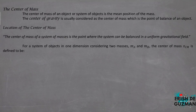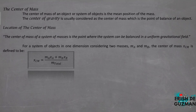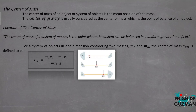For a system of objects in one dimension, considering two masses MA and MB (or M1 and M2), the center of mass along the horizontal axis is defined as: x_cm = (MA·xA + MB·xB) / (MA + MB). That is, we multiply each mass by its location from the reference point and divide by the total mass. If M1 is larger than M2, the center of mass is closer to M1. If they are equal, the center of mass is at the midpoint. If M2 is larger, the center of mass is closer to M2.